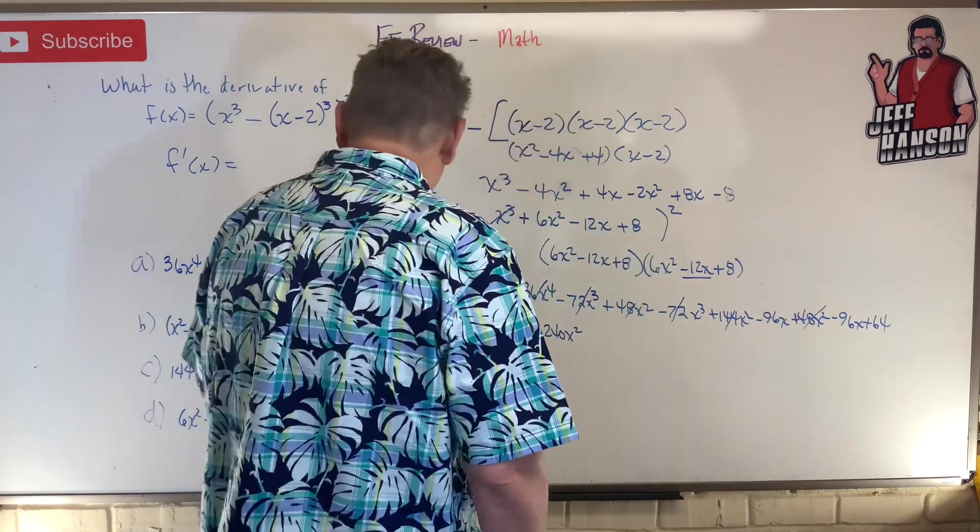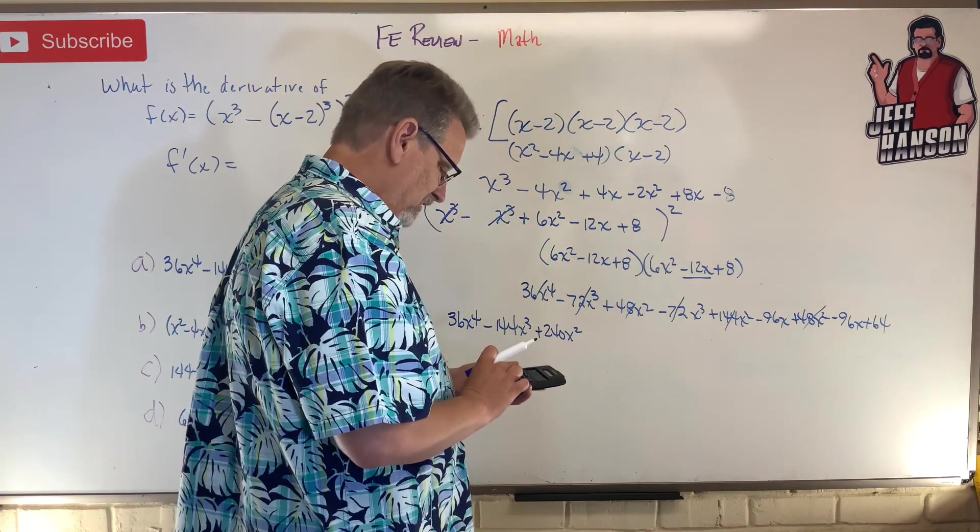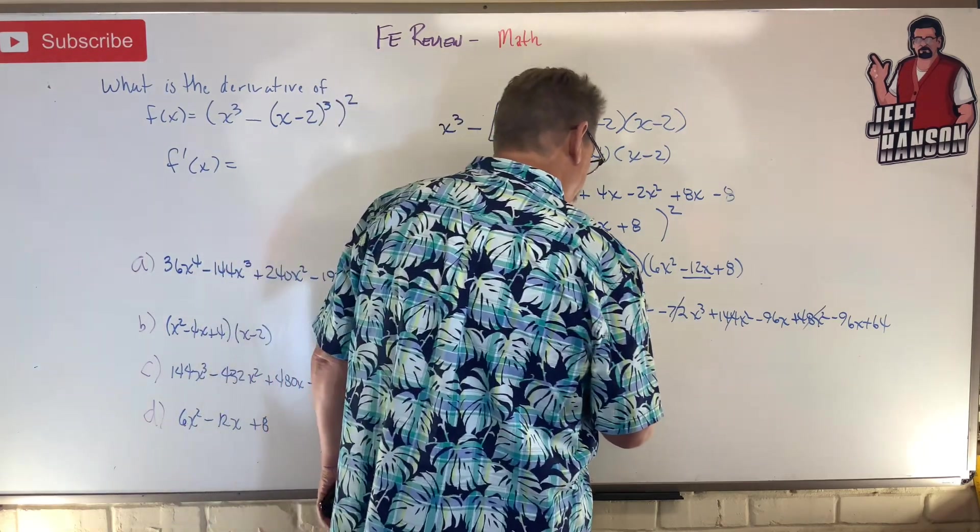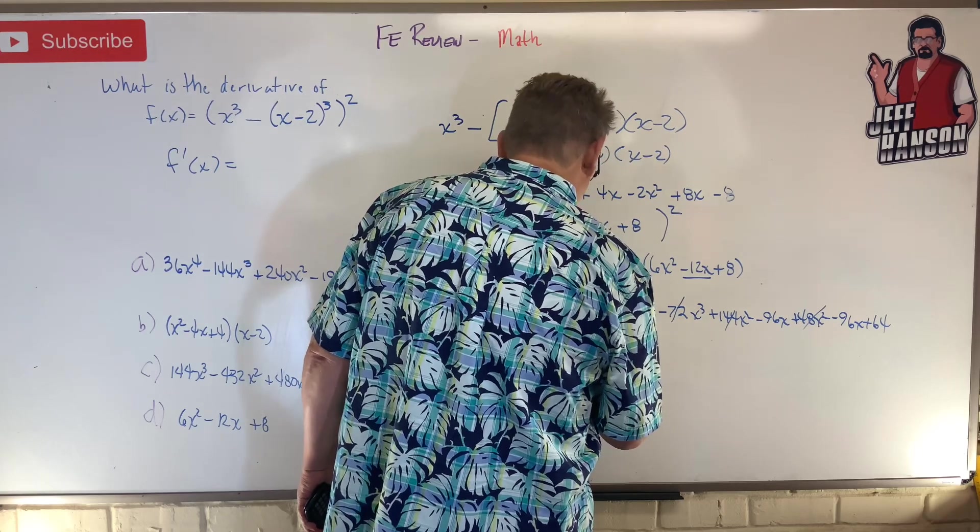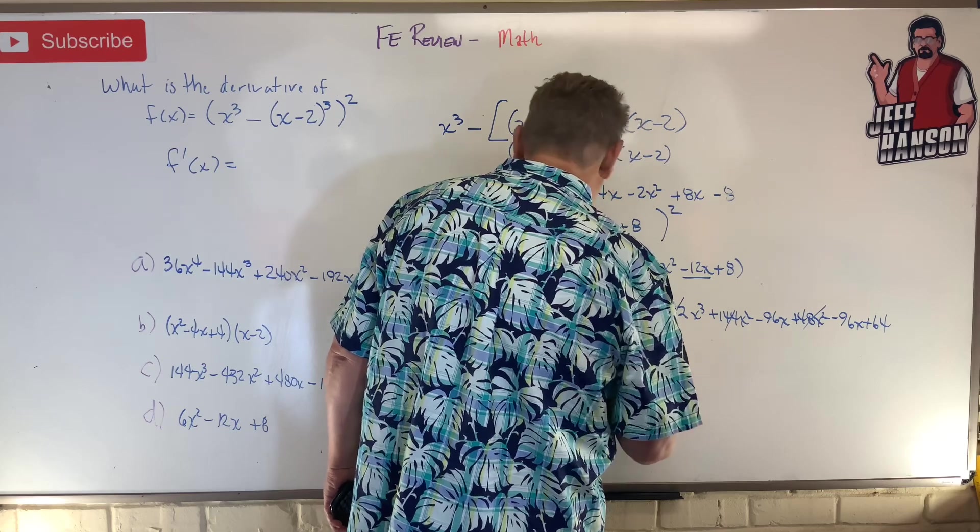I got 96 times 2, -192x + 64. Okay, now can we take the derivative of that?